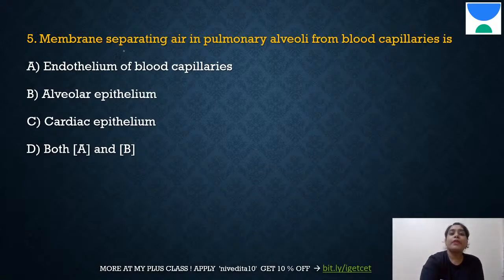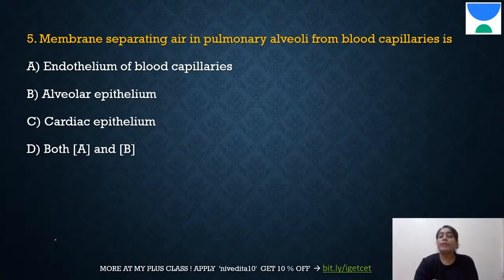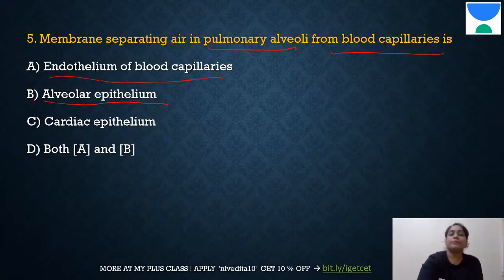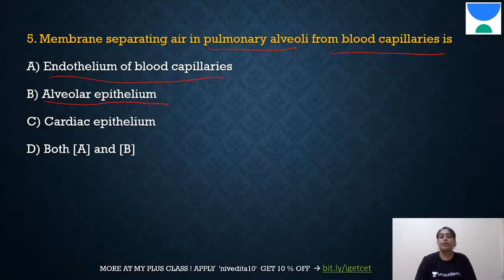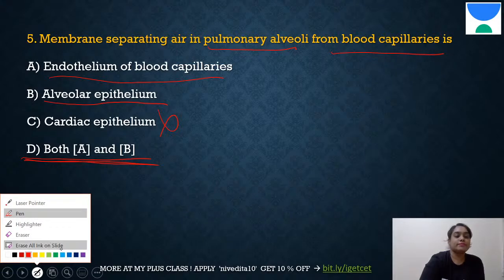Question 5: Membranes separating air in pulmonary alveoli from blood capillaries — the answer is D: both A and B, i.e., endothelium of blood capillaries and alveolar epithelium, along with the basement membrane. Cardiac epithelium is only present in the heart, so option C is eliminated.